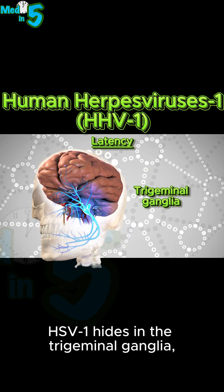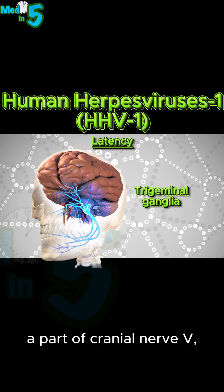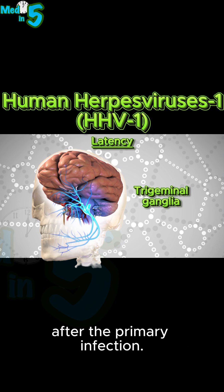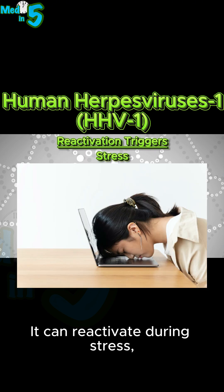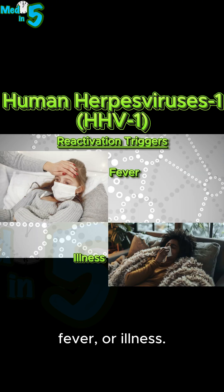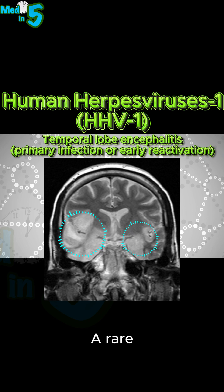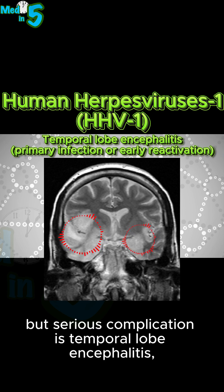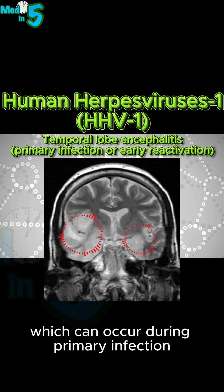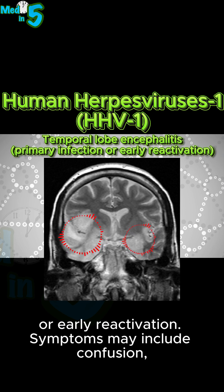HSV-1 hides in the trigeminal ganglia, a part of cranial nerve 5. After the primary infection, it can reactivate during stress, fever, or illness. Reactivation presents as cold sores around the lips. A rare but serious complication is temporal lobe encephalitis, which can occur during primary infection or early reactivation.